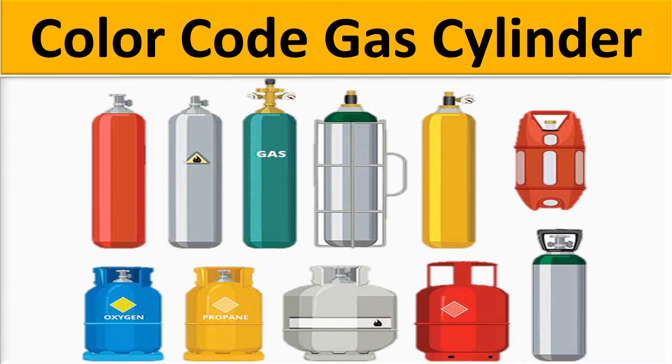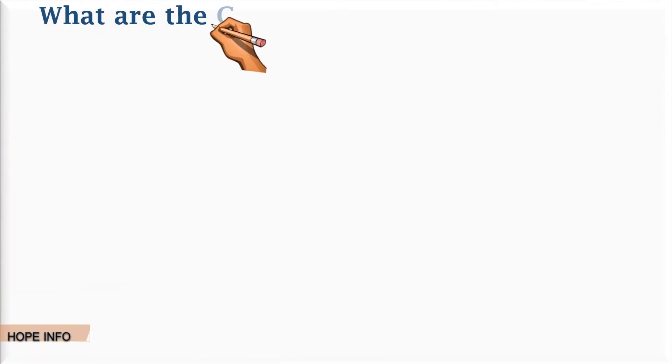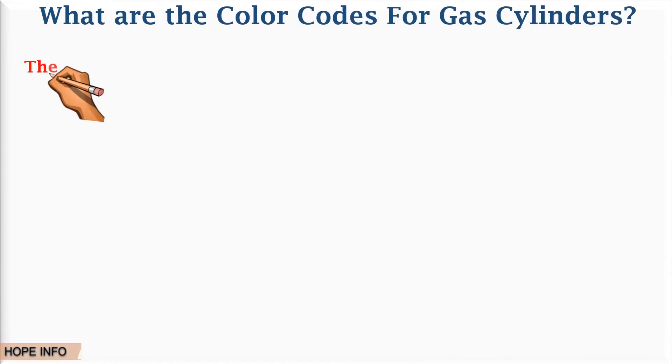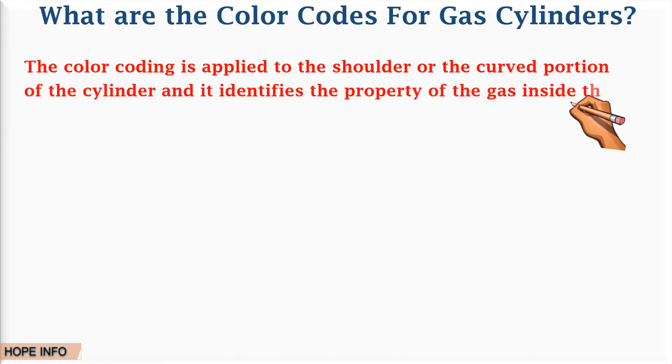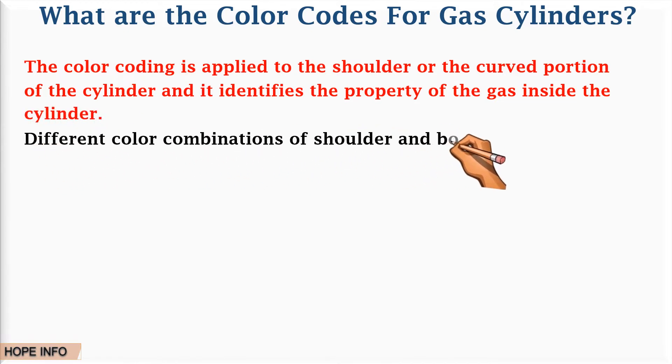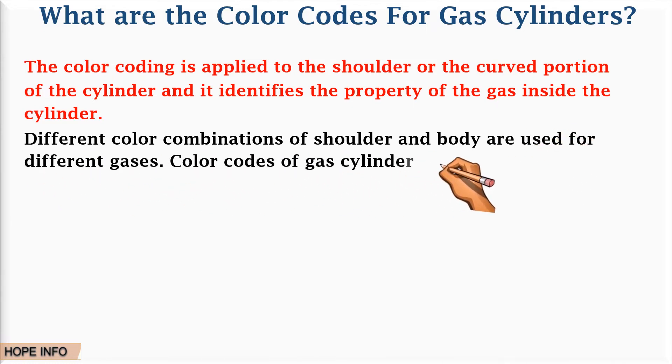What are the color codes for gas cylinders? The color coding is applied to the shoulder or curved portion of the cylinder and it identifies the property of the gas inside the cylinder. Different color combinations of shoulder and body are used for different gases.